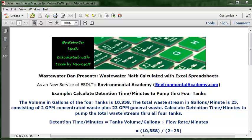Today's example is to calculate detention time in minutes to pump through four tanks. The problem reads: the volume in gallons of the four tanks is 10,358. The total waste stream in gallons per minute is 25, consisting of 2 GPM concentrated waste plus 23 GPM general waste. Calculate detention time in minutes to pump the total waste stream through all four tanks.